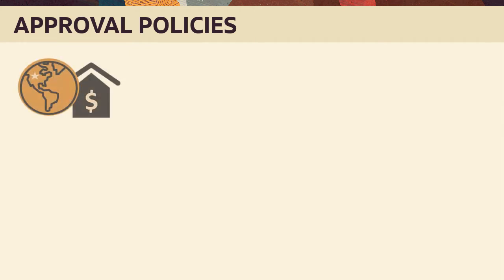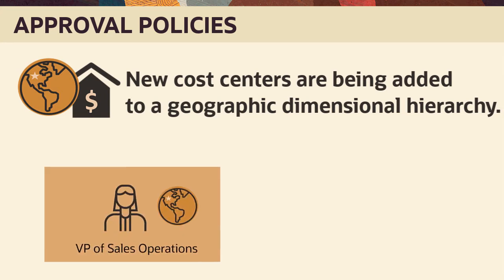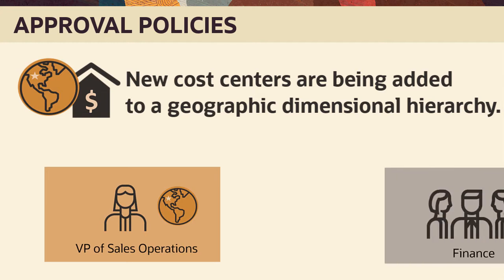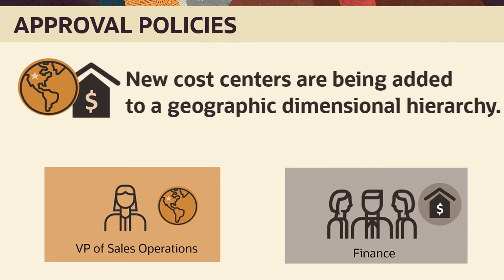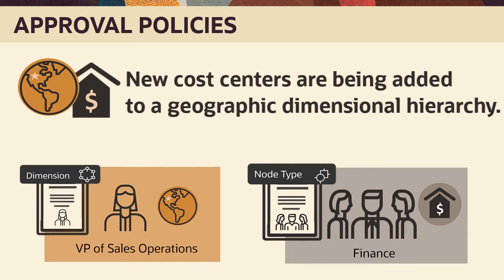For example, assume you're adding new cost centers to a geographically organized cost center dimensional hierarchy. You want a regional VP of sales operations to approve changes to the hierarchy, and finance to approve adding a new cost center. Create an approval policy specifying approvers in finance at the cost center node type level, and another policy at the geography hierarchy or cost center dimension level with the VP of sales operations as the approver.